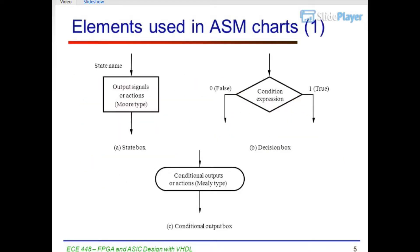Elements used in ASM Charts: 1. State Box — contains State Name and Output Signals or Actions (Moore Type). 2. Decision Box — with Condition Expression, False (0) and True (1) exits. 3. Conditional Output Box — contains Conditional Outputs or Actions (Mealy Type).